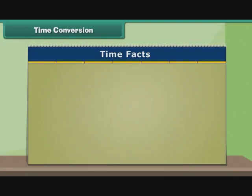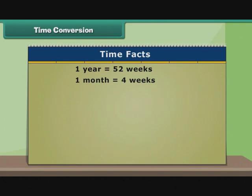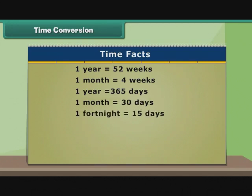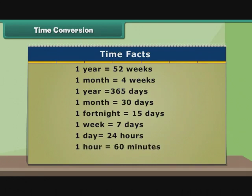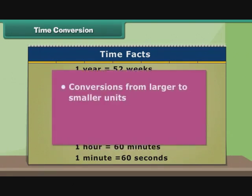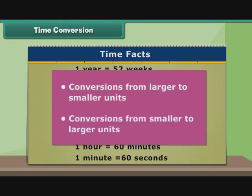Here are some facts about time. 1 year is equal to 52 weeks. 1 month is equal to 4 weeks. 1 year is equal to 365 days. 1 month is equal to 30 days. 1 fortnight is equal to 15 days. 1 week is equal to 7 days. 1 day is equal to 24 hours. 1 hour is equal to 60 minutes. 1 minute is equal to 60 seconds. Let us put these facts to use and perform conversions from larger to smaller units, and from smaller to larger units.